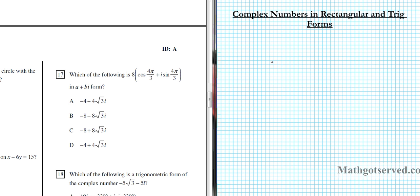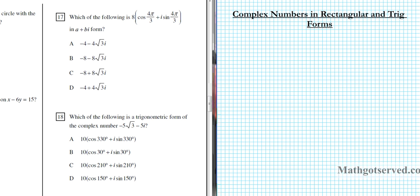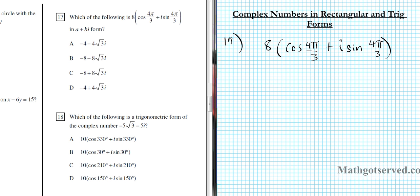Good day students. In this part we're going to be going over how to write complex numbers in rectangular and trig forms. So let's go ahead and take a look at number 17. In question 17 we are to express the complex number in polar form — 8 cosine 4π/3 plus i sine 4π/3 — in rectangular form.